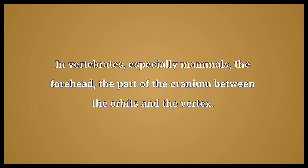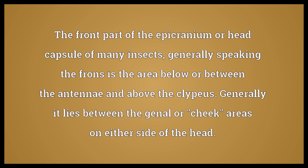Frons. In vertebrates, especially mammals, the forehead — the part of the cranium between the orbits and the vertex. The front part of the epicranium or head capsule of many insects; generally speaking, the frons is the area below or between the antennae and above the clypeus. Generally it lies between the genae, or cheeks — areas on either side of the head.